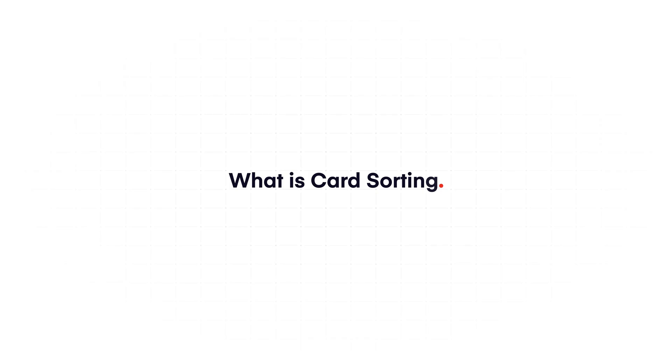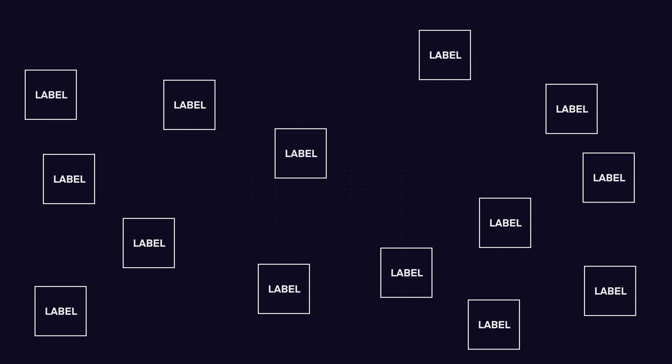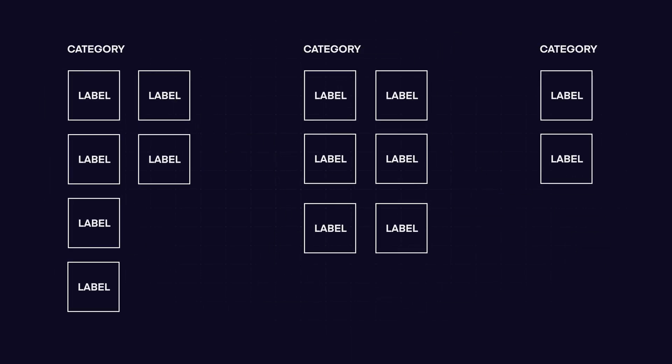What is a card sorting exercise? It's basically a UX research method to understand how your users view, label, and categorize your content. Based on the results you get back, you can make data-driven decisions around how to shape your sitemap and information architecture.